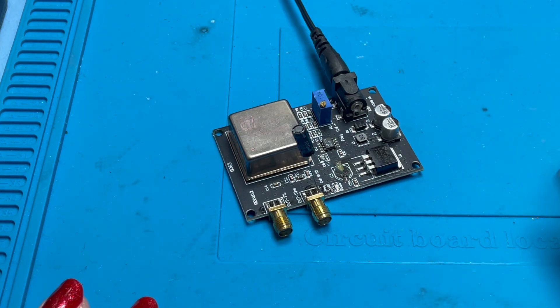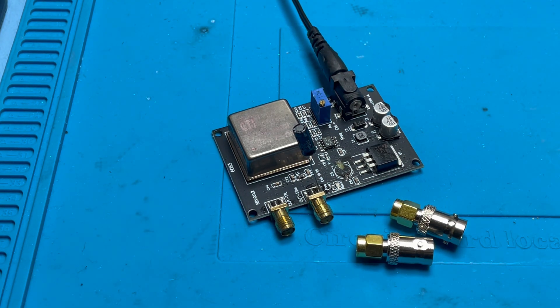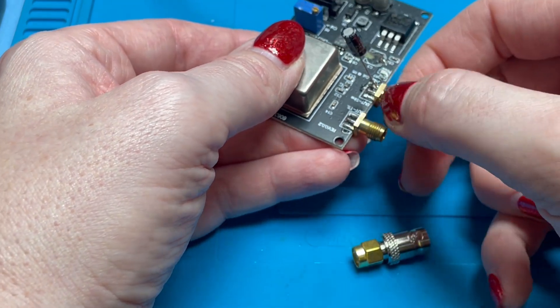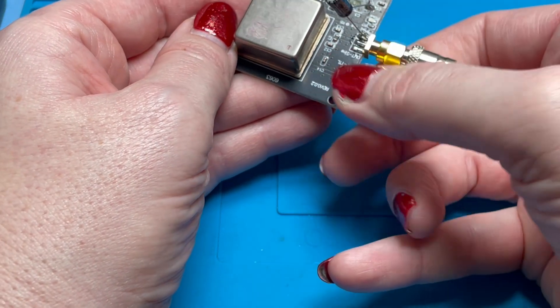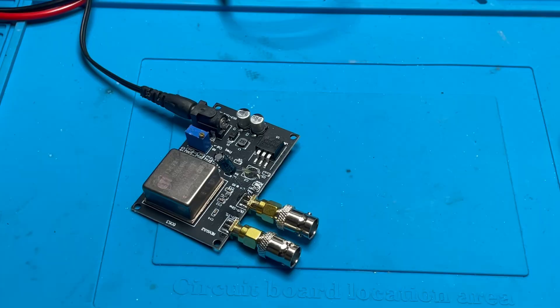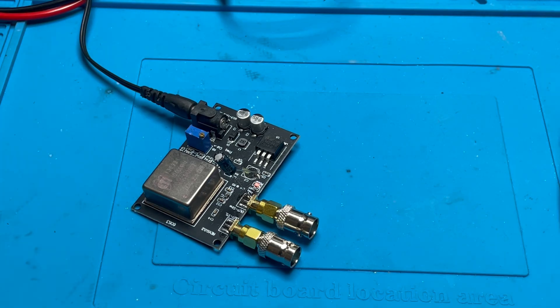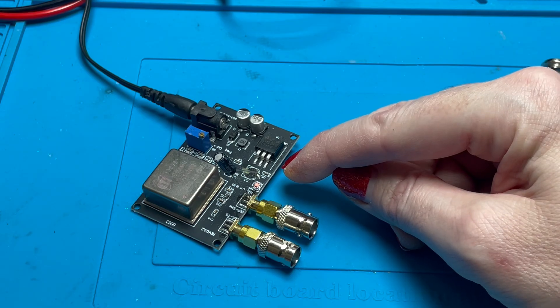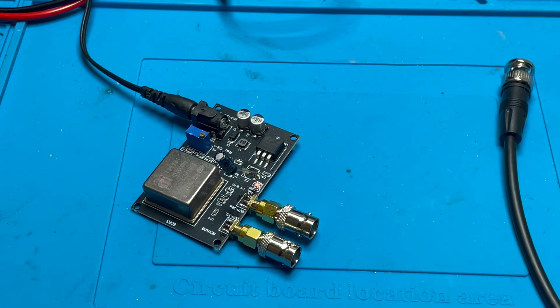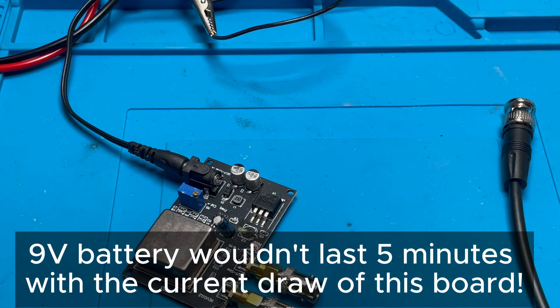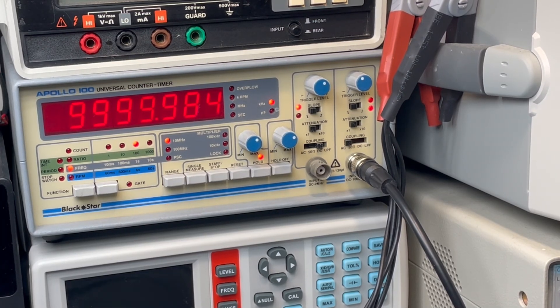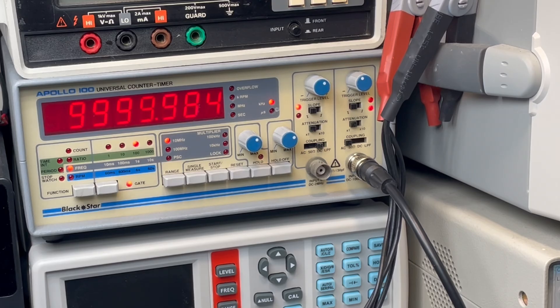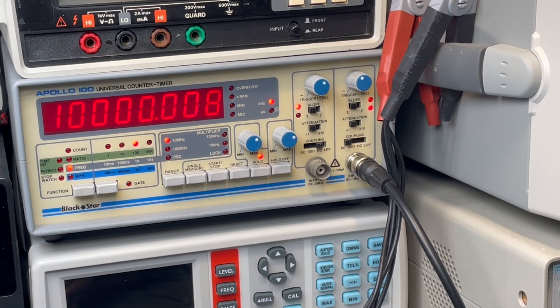I don't know if we're going to get any indication on here as to whether it's on or not. I'm going to switch this on and we'll see what current it draws. Oh, we have got a little LED there, so it's doing something. That's always a good thing. Okay, about 400 milliamps. All right, let's see if it puts anything out then. Let's hook it up to the counter. Okay, not bad.